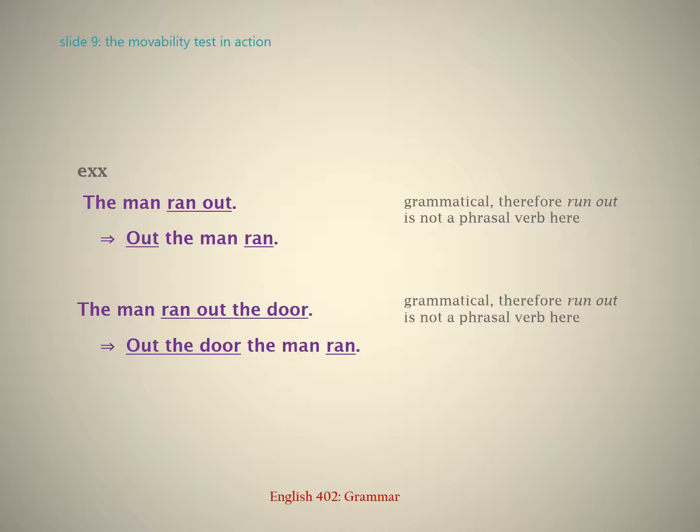Examples: 'The man ran out.' → 'Out the man ran.' — Grammatical; therefore 'run out' is not a phrasal verb here. 'The man ran out the door.' → 'Out the door the man ran.' — Grammatical; therefore 'run out' is not a phrasal verb here.